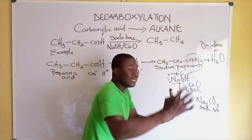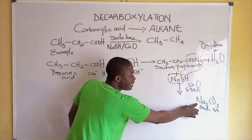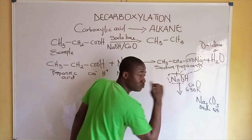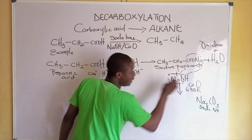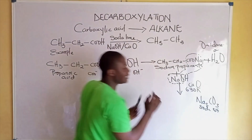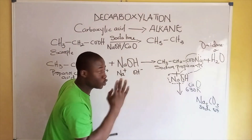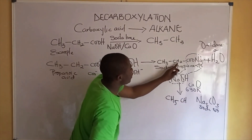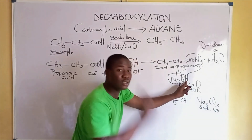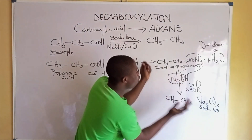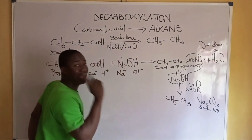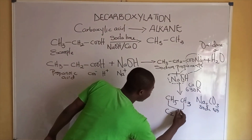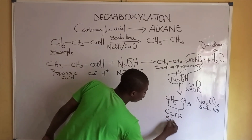We can see that we have two sodium atoms forming Na₂, one carbon atom, and three oxygen atoms, giving us Na₂CO₃ — soda ash. The major product is CH₃ bonding to CH₂, and you can see we have two hydrogen atoms here and one remaining hydrogen atom, so when they combine we get CH₃CH₃. When we condense this formula we get C₂H₆, which is called ethane.